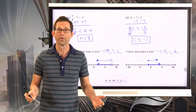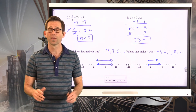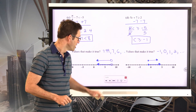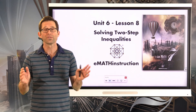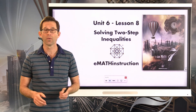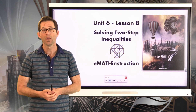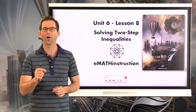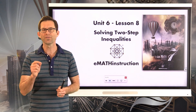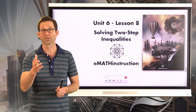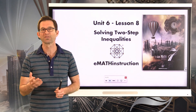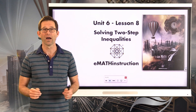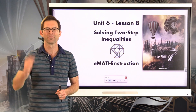The moral of the story is we solve two-step inequalities exactly the same way we solve two-step equations — at least in all the cases today. This was based on the properties of inequalities. In the next lesson, Unit 6 Lesson 9, we'll see one exception to this rule — one little difference between the properties of equality and inequality. For now, thank you for joining me for another NGen Math 7 lesson by eMath Instruction. My name is Kirk Weiler — keep thinking and keep solving problems.